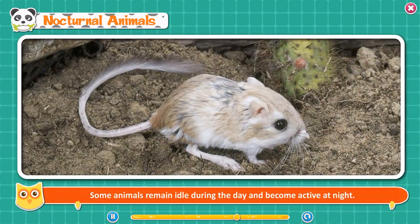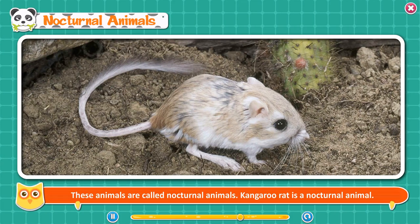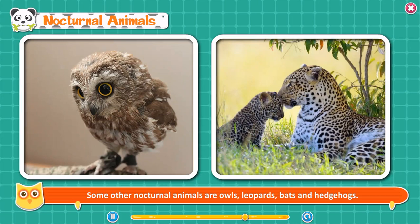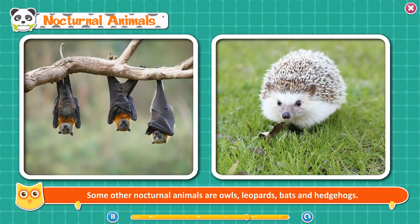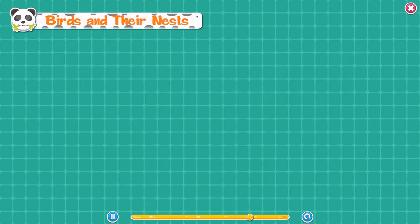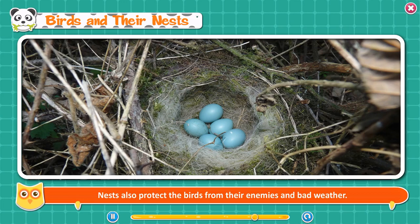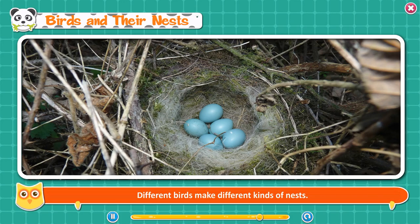Nocturnal animals. Some animals remain idle during the day and become active at night — these are called nocturnal animals. Kangaroo rat is a nocturnal animal that lives in desert areas in a cool underground hole and comes out at night when the weather is relatively cool. Some other nocturnal animals are owls, leopards, bats, and hedgehogs. These animals have highly developed senses of sight, smell, and hearing. Birds and their nests. Birds live in homes called nests, which they make on their own to lay eggs and take care of their young ones. Nests also protect the birds from enemies and bad weather. Nests are made up of straw, hair, fibers, dry grass, leaves, threads, twigs, and feathers. Different birds make different kinds of nests of different shapes and materials.